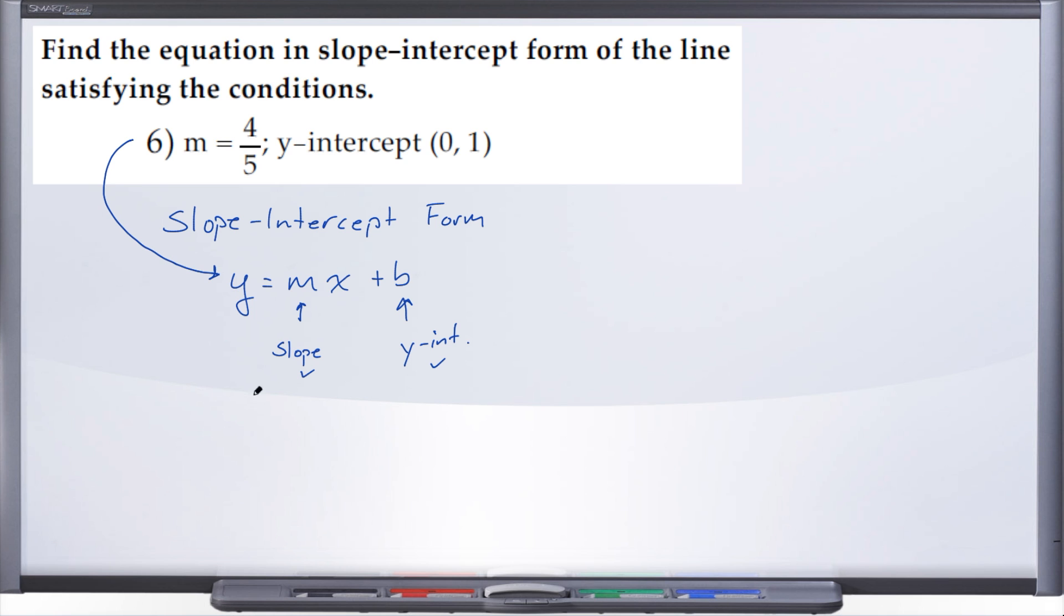So we will end up with y equals, and instead of m we're going to replace m with 4 over 5, and then x. And what's our y-intercept? Positive 1. So plus 1.